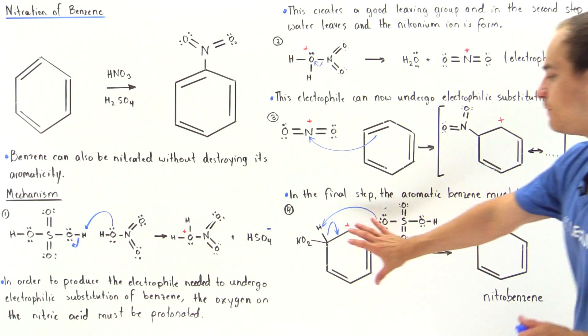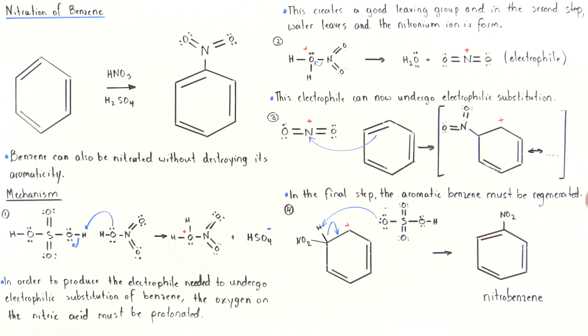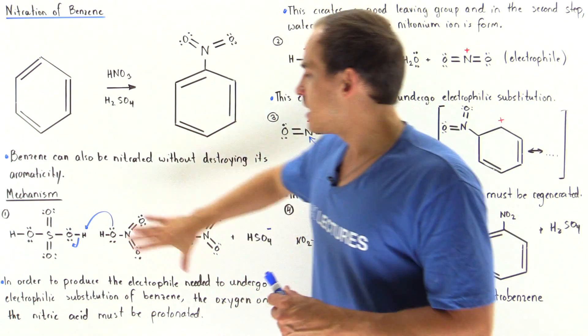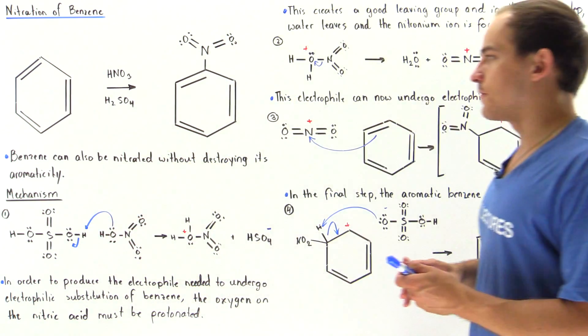We regenerate our aromatic molecule. In the process we form a benzene molecule that has this NO2 group attached to one of our carbons. We substituted one of our H's for this NO2 molecule and we also reform our acid, sulfuric acid, because it regains the H atom that it lost in our first step.